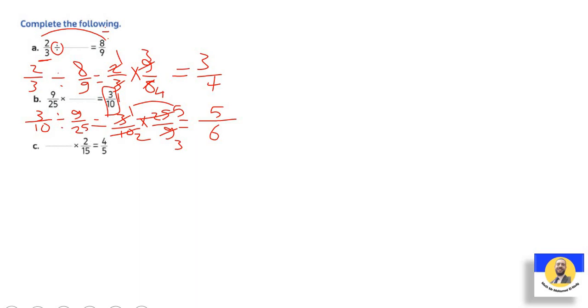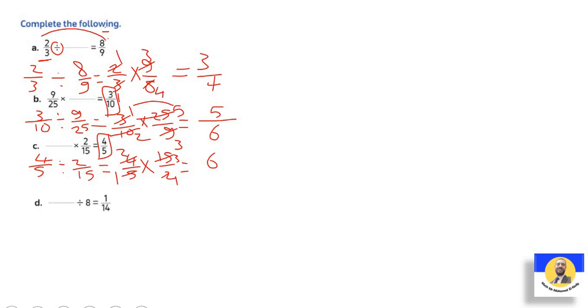Letter c: what times two-fifteenths equals four-fifths. Change multiplication to division: four-fifths divided by two-fifteenths. Keep, Change, Flip. Simplify: two and two divided by two give one and one; five and fifteen divided by five give one and three. Answer: one times three equals three, two times one equals two — wait, corrected: answer is six. Letter d: what divided by eight equals one-fourteenth. First number missing, so multiply: one-fourteenth times eight (eight-over-one). Simplify: eight and fourteen divided by two give four and seven. Answer: four-sevenths.